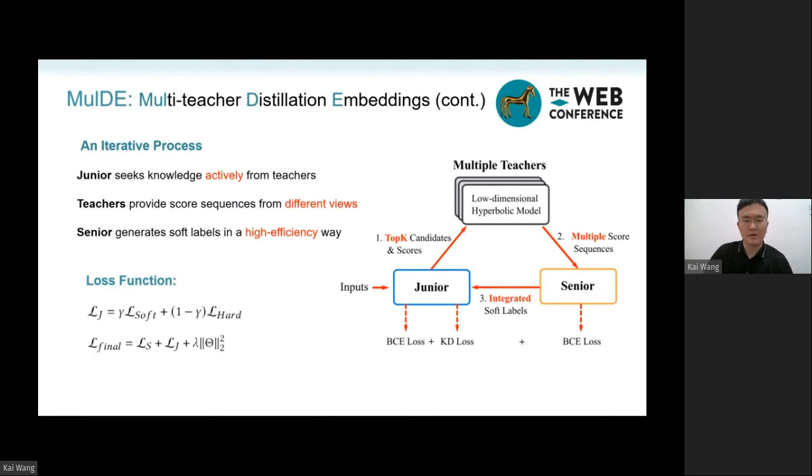junior students update the parameters in soft and hard supervision and ask the teacher again for new knowledge. The final loss function for MulDE is shown on the slide, containing three parts balanced by two hyperparameters.